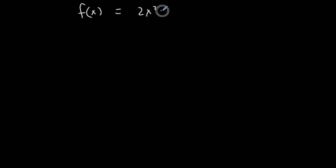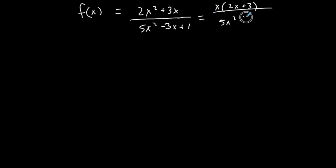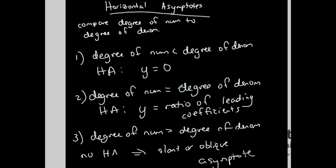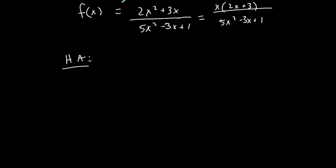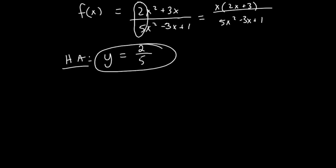Here's another example: 2x squared plus 3x over 5x squared minus 3x plus 1. This rational function does not have a hole since the bottom doesn't factor usefully. It does have vertical asymptotes when you set the denominator equal to 0, which would require the quadratic formula. It also has a horizontal asymptote because the degree of the numerator equals the degree of the denominator — that's Case 2. The horizontal asymptote is y equals the ratio of the leading coefficients: 2 over 5. You basically take just that fraction to get your horizontal asymptote when the degrees are the same.